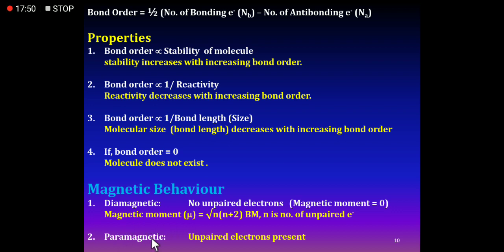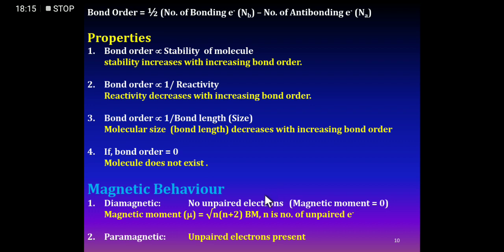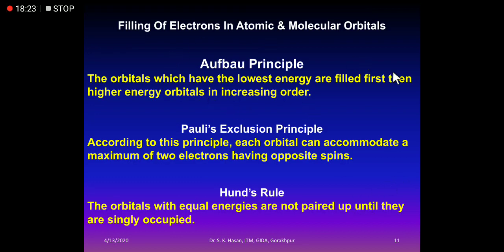If unpaired electrons are present in any orbital, the molecule has a non-zero magnetic moment and is paramagnetic. To check magnetic behavior, we write the molecular orbital electronic configuration and check whether any orbital has a single (unpaired) electron.